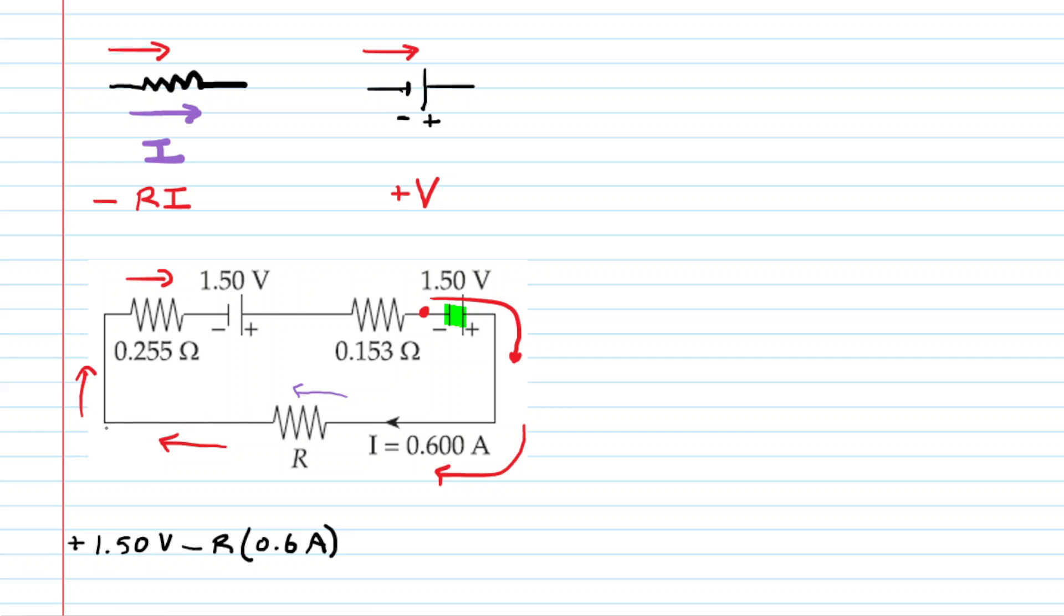Moving along through the loop, we make a turn over here, and then we're up in the upper left corner. Now again, the current is flowing in the same direction as the direction in which we are moving. So we're going to have a negative potential change. It'll be minus, and then you'll have the resistance value of 0.255 ohms, and that'll be multiplied by the current of 0.6 amps.